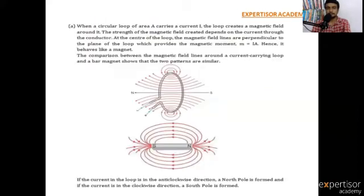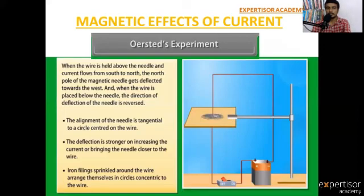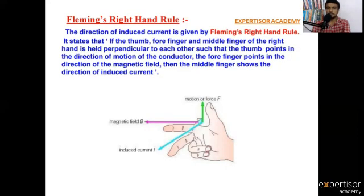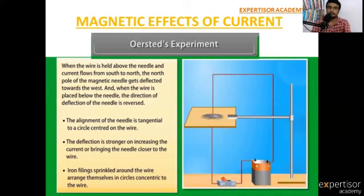In this video we covered: magnetic effects of current, Oersted's experiment, and Fleming's right-hand rule. There are more topics in this chapter. In the next video, I will discuss those topics. Thanks for watching this video. For more videos, visit our website. Thank you.